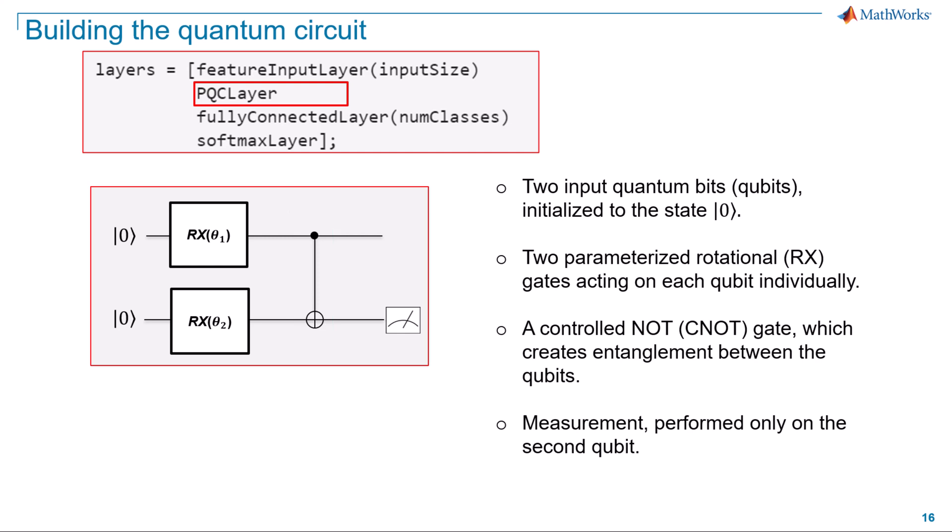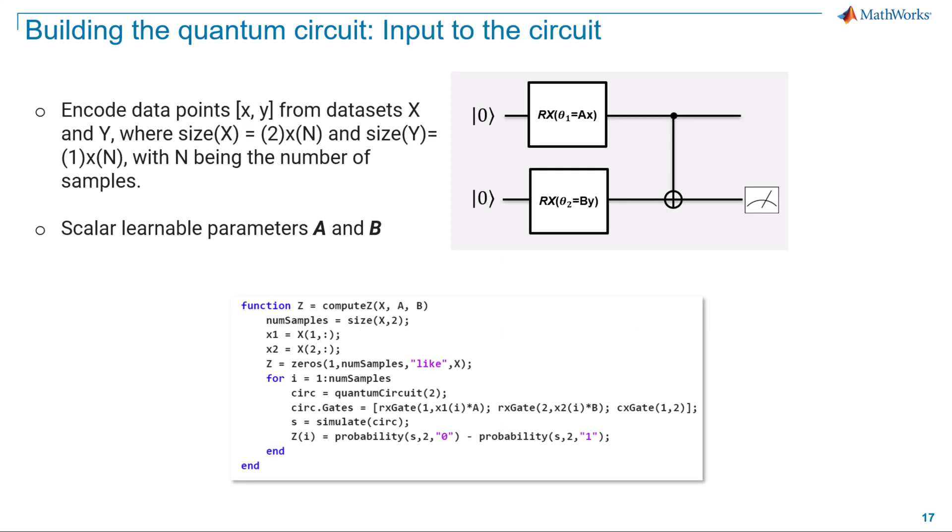For more on quantum gates, see the documentation linked below. The final component is measuring the second qubit, specific to this problem which relies on the understanding of the circuit. From our XOR dataset, we have real numbers for X and Y which we want to encode on the qubits. But before that, let me introduce you to two scalar learnable parameters A and B.